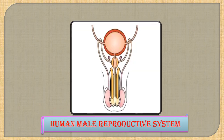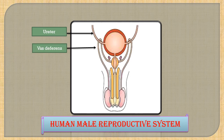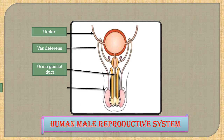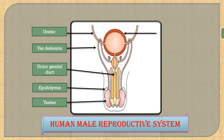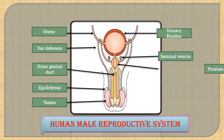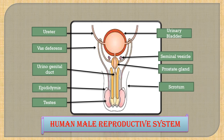The Human Male Reproductive System consists of different parts like ureter, vas deferens, urinogenital duct, epididymis, testes, urinary bladder, seminal vesicle, prostate gland, and scrotum. These are the parts of the Human Male Reproductive System. We are going to learn about all these parts and their functions one by one.